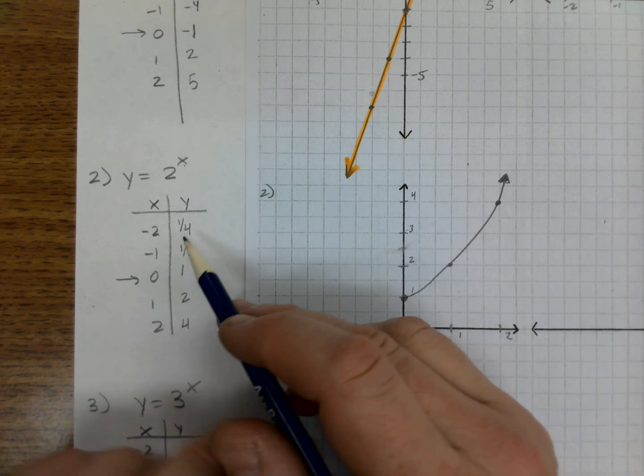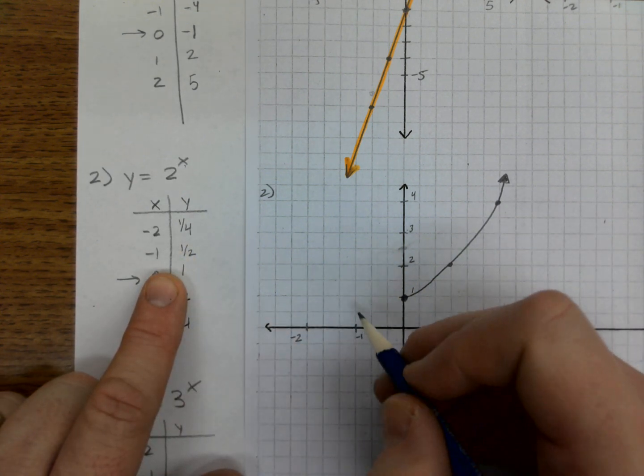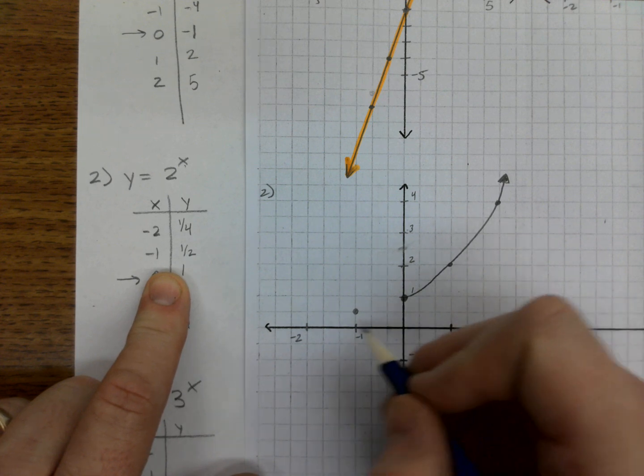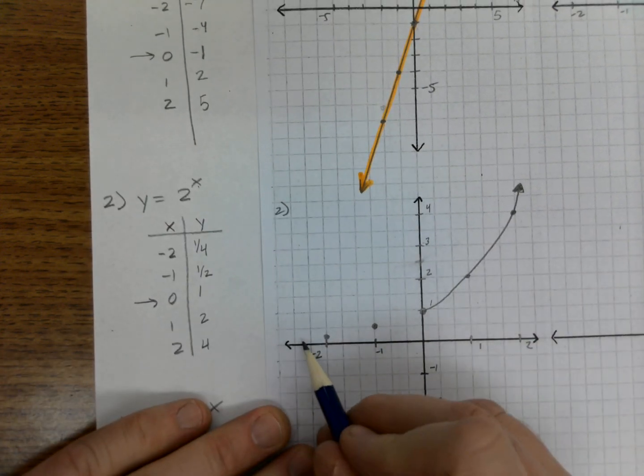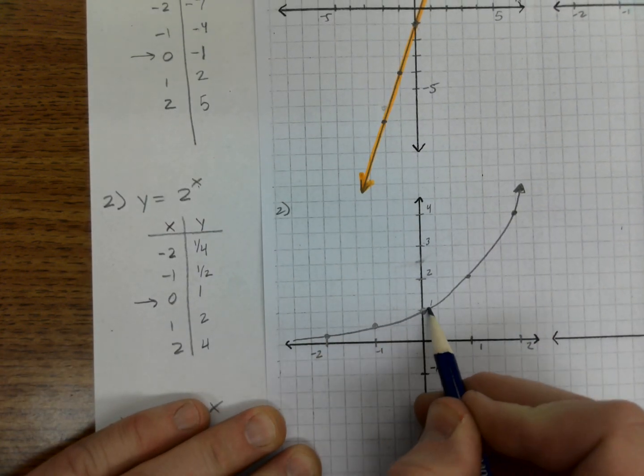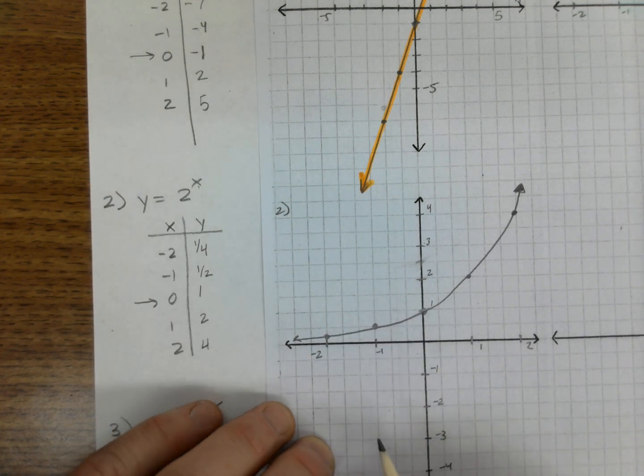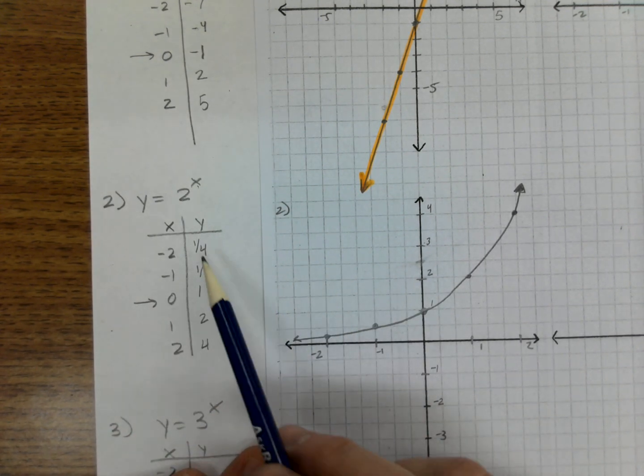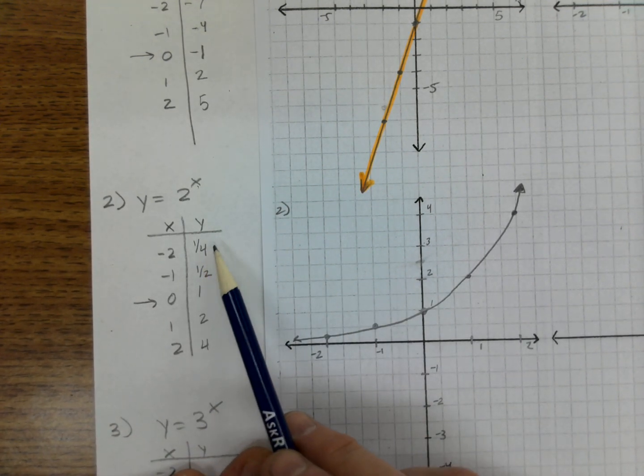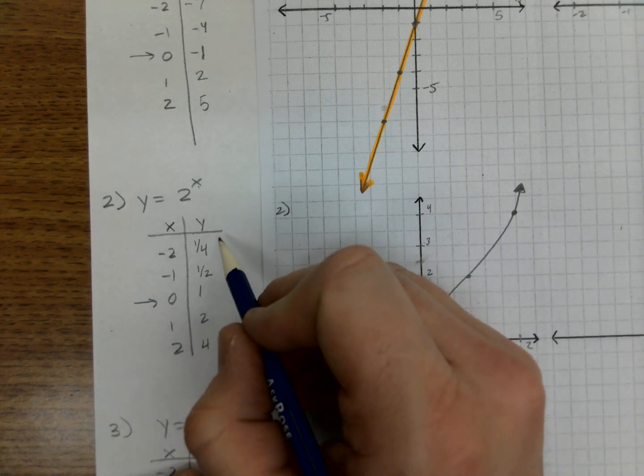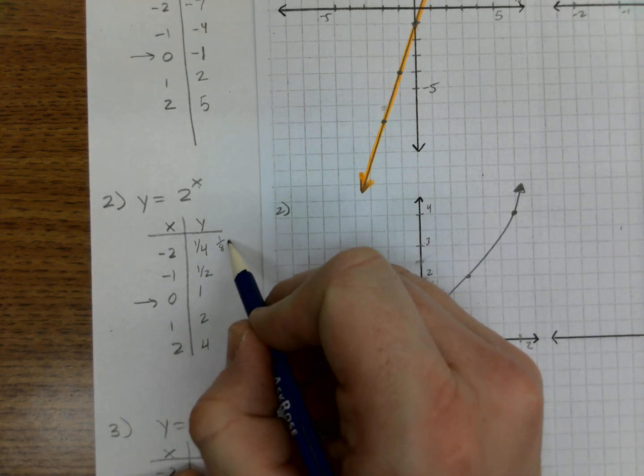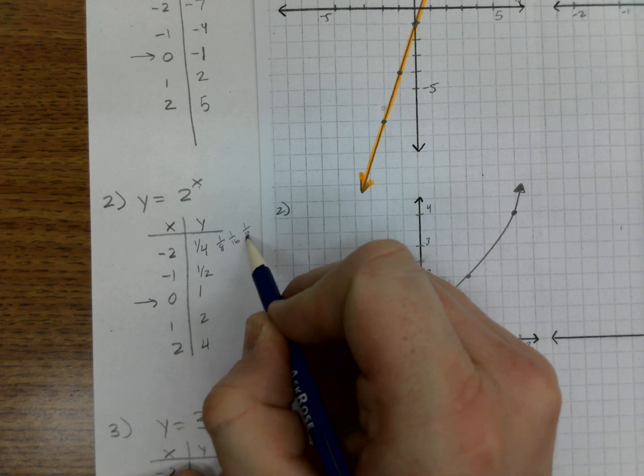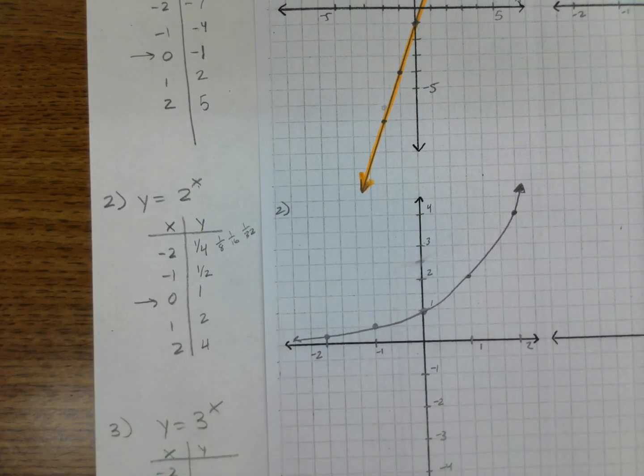Then what about going backwards? Well, negative 1 is 1 half, and that would be right here. And negative 2 is 1 fourth. These are also curving. But the one thing to remember here is that these points are always getting smaller, but they're never going to go to 0. If I keep cutting this in half, it's going to be 1 over 8, 1 over 16, 1 over 32, never to 0.